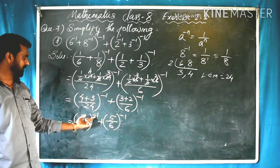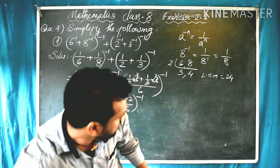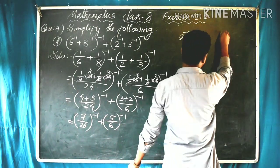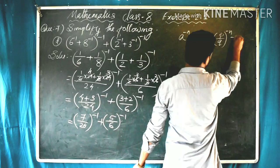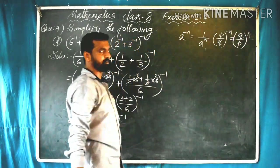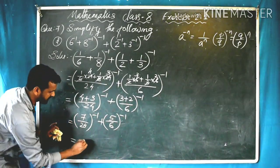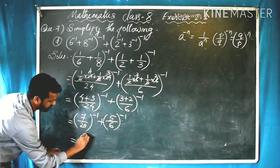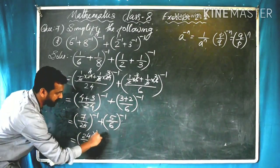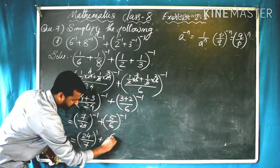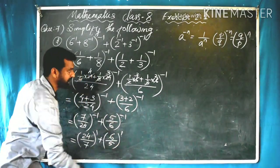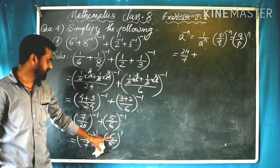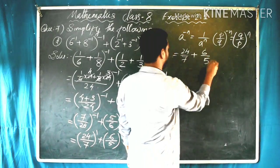That gives us 24/7 plus 6/5. Now we add these two rational numbers by taking LCM of 7 and 5, which is 35. Writing 35 in the denominator, numerator is: 24 × (35/7) plus 6 × (35/5), that is 24 × 5 plus 6 × 7, which equals 120 plus 42.